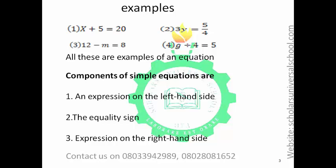Look at these examples: x plus 5 is equal to 20; 3y is equal to 5 over 4; 12 minus M is equal to 8; G divided by 4 is equal to 5. For all these equations, we need to show that what is at the left-hand side is equal to what is at the right-hand side. We need to find the value of x, y, M, and G respectively. All these are examples of an equation.